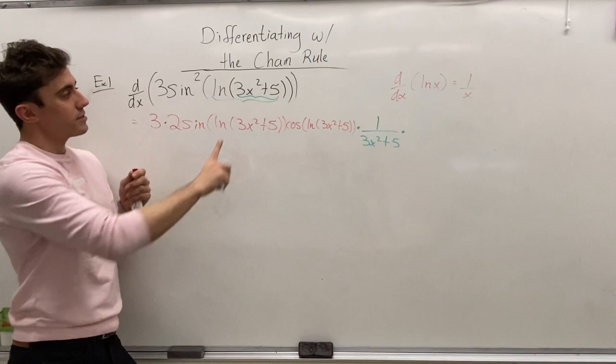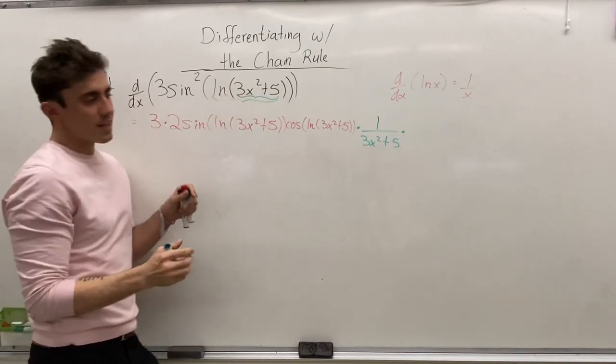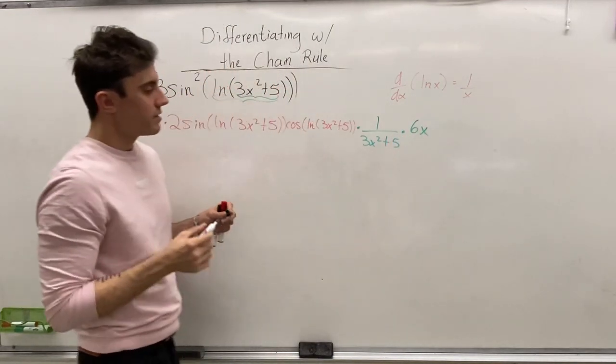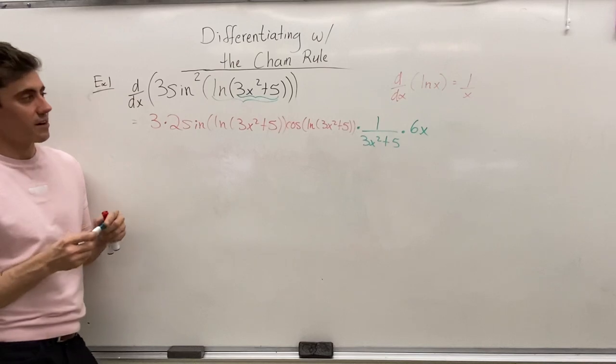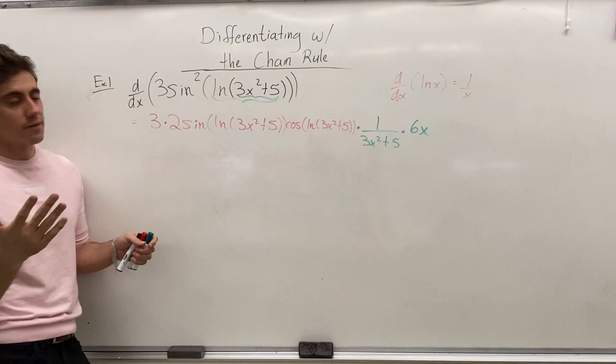And the derivative of 3x squared plus 5, this one is straightforward enough. We're going to have 6x to multiply through. And now, we've finally taken care of everything. And so, here is our long-winded expression for our derivative.